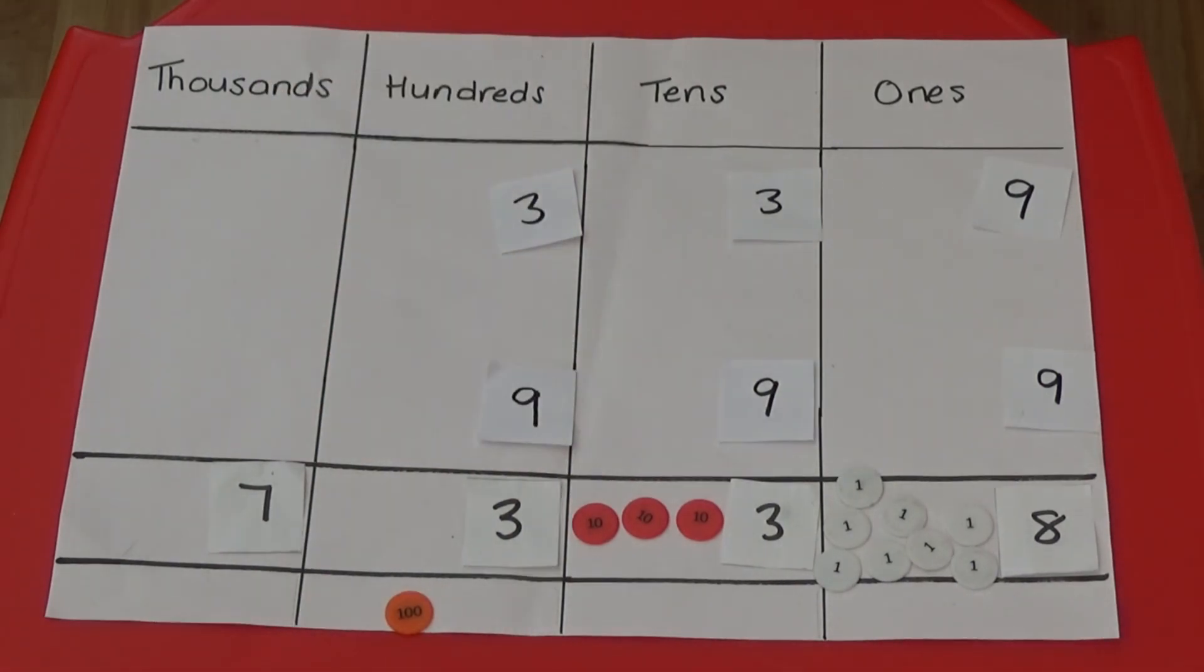3 100s and 9 100s as the 100 underneath equals 13 100s.